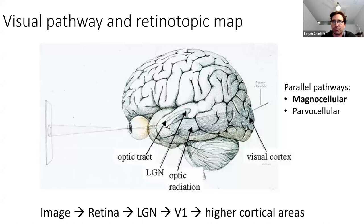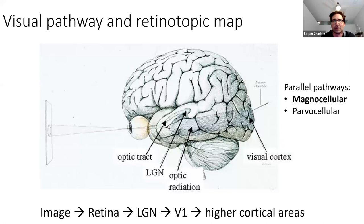There are multiple parallel pathways in the visual system. Two of the big ones are called the magnocellular pathway and the parvocellular pathway. The one we're interested in for our modeling efforts is the magnocellular pathway. For the magno pathway, think of it as processing motion mainly, and the parvo pathway as being responsible for processing color and identifying objects. It's a very oversimplified view, but for this talk you can think of them that way.